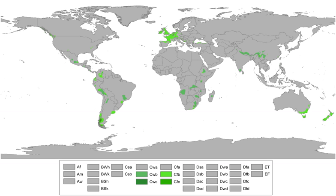In coastal areas of the higher middle latitudes, the prevailing onshore flow creates the basic structure of most oceanic climates. Oceanic climates are a product and reflection of the ocean adjacent to them.